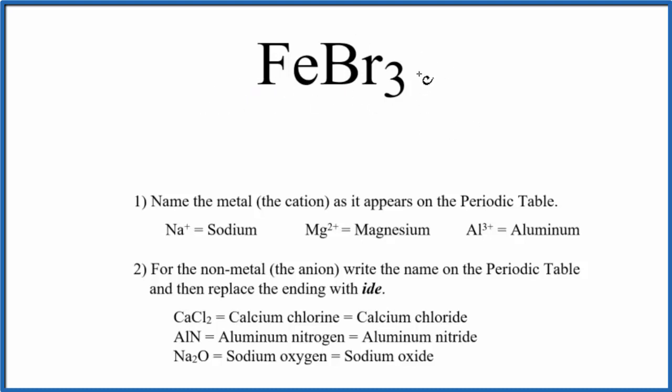So because of that, we're going to worry about the charge of each of these elements here. So we write the name of the cation, the metal here, as it appears on the periodic table. So that's just Fe, that's iron.